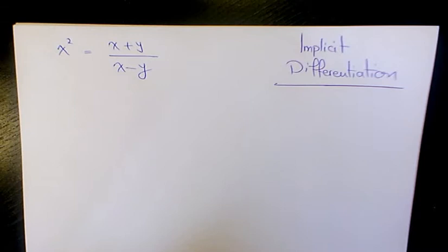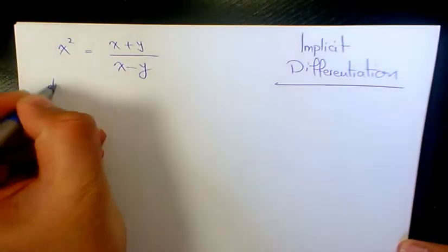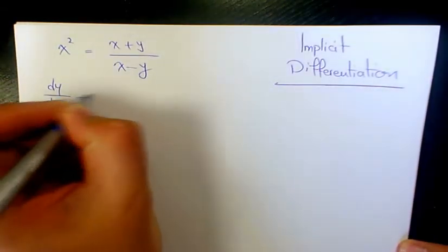In this video I want to show you how to find the derivative of x squared equals to x plus y divided by x minus y. And we need to use implicit differentiation.